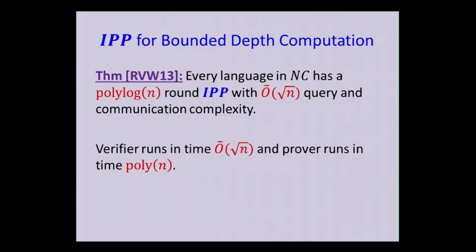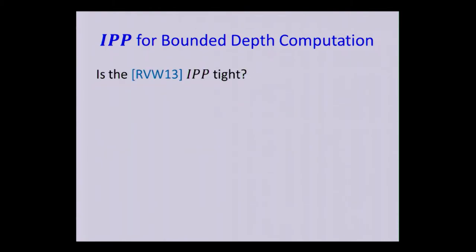So what I find remarkable about this result is that it captures a very large class of functions. This is in contrast to the property testing setting in which typically for every different problem, we have a completely different solution. Here they give a solution that handles any problem within this very large class. But still, you could ask, is this result tight?